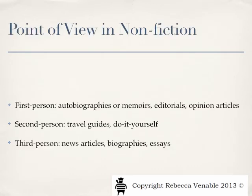Point of view also shows up in nonfiction, although it doesn't necessarily give us insights into characters as it does in fiction. Instead, it allows us to look for bias. In first-person nonfiction, we see autobiographies and memoirs — we need to be aware of bias here because they're retelling an event through their own memories, which can be skewed, and colored through their opinions of people or events. Similarly, editorials and opinion articles are entirely persuasive text, and by using first-person, we need to be aware that their bias is the entire point behind the article.